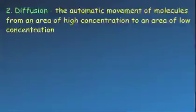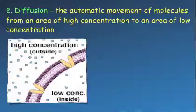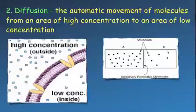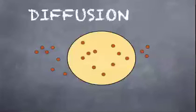Number two: diffusion. Diffusion is the automatic movement of molecules from an area of high concentration to an area of low concentration. Concentration is how much stuff there is in a solution. So if there's more concentration on the outside of the cell than the inside, stuff will move inside the cell. For example, will the little particles move to the right or to the left? They will move to the right. Stuff will move into the cell because there was more stuff on the outside — molecules move from high to low.